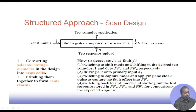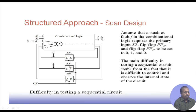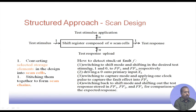After this shift register has been loaded, the test stimulus will be applied to the circuit, and the response of the circuit will be captured onto the scan flip-flops. For the previous circuit example, I have to apply FF3 and FF2 as 0 and 1. First, we switch to shift mode and serially shift the desired test stimulus — 1 to flip-flop 2 and 0 to flip-flop 3. After this has been shifted, we apply 0 to primary input X3.